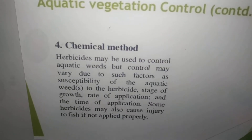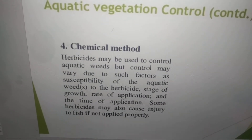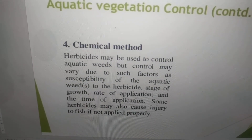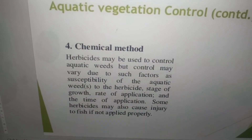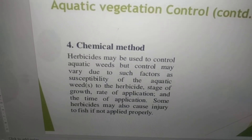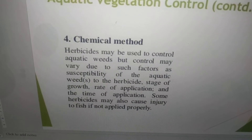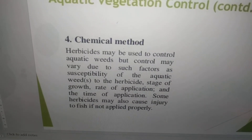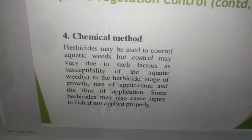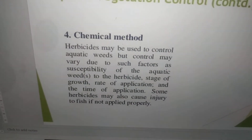Chemical method: herbicides may be used to control aquatic weeds. Control may vary due to such factors as susceptibility of aquatic weeds to the herbicide, stage of growth, rate of application and time of application. Some herbicides may also cause injury to fish if not applied properly.